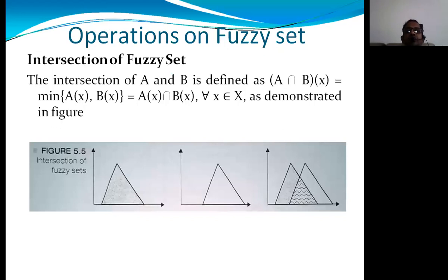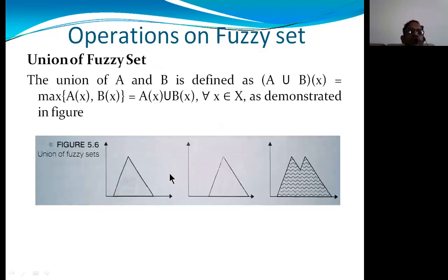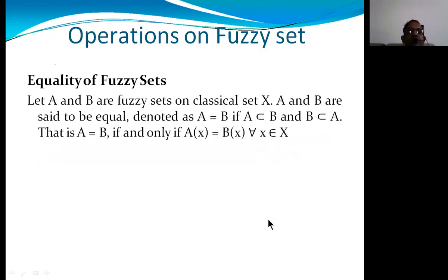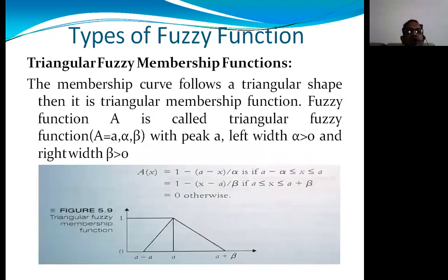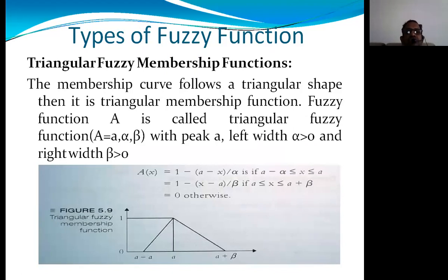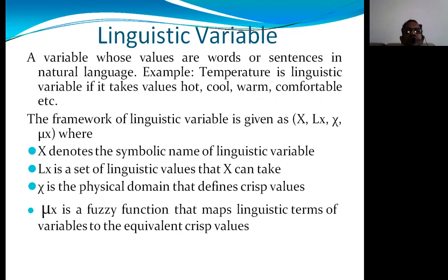In unit two, we performed various operations on fuzzy sets: union operation — joining two fuzzy sets to get a combined fuzzy set — and complement, which is 1 minus A(x). We discussed equality of two fuzzy sets. Note that quasi fuzzy membership is not in the syllabus. We also covered types of fuzzy membership functions: triangular fuzzy function and trapezoidal fuzzy function.